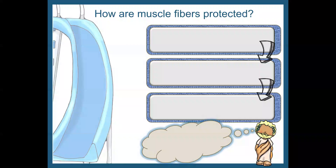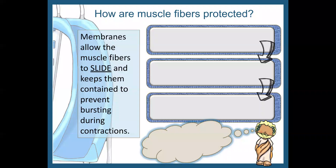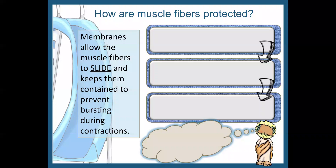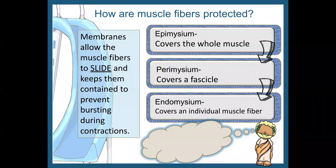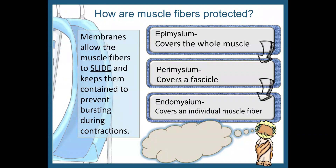Membranes allow muscle fibers to slide and keep them contained to prevent bursting during contractions. The epimysium covers the entire muscle. The perimysium covers a fascicle. And the endomysium covers an individual muscle fiber. Reference that last slide to see the whole muscle, the fascicle, and the muscle fibers, and here we're showing how each of those are protected.